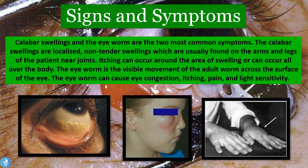Now let's talk about signs and symptoms. The patient develops calabar swellings and the eye worm, which are the two most common symptoms. Calabar swellings are localized, non-tender swellings usually found on the arms and legs near the joints. We can see what a calabar swelling looks like on the top of the hand, and another just under the right eye of a patient. Itching can occur around the area of swelling or all over the body. The eye worm is the visible movement of the adult worm across the surface of the eye, which can cause eye congestion, itching, pain, and light sensitivity.